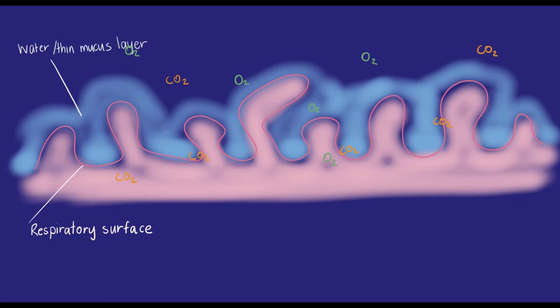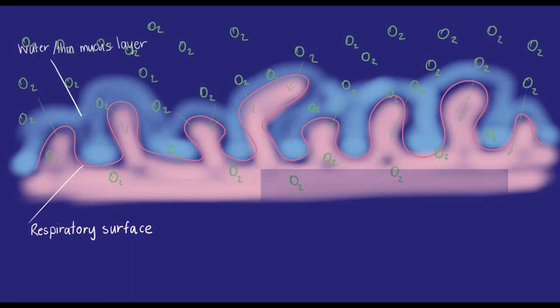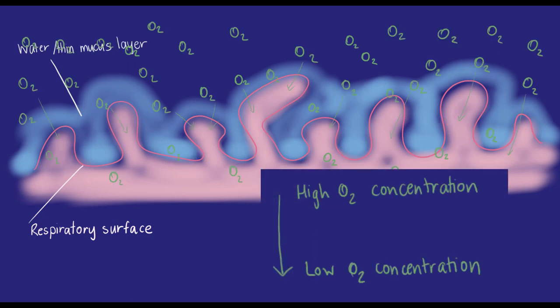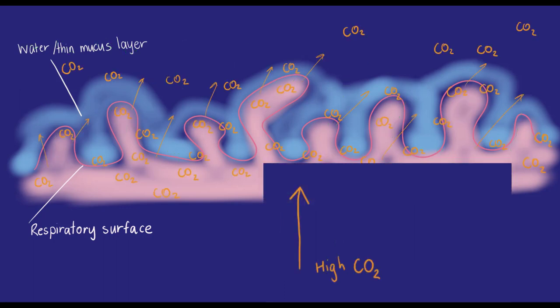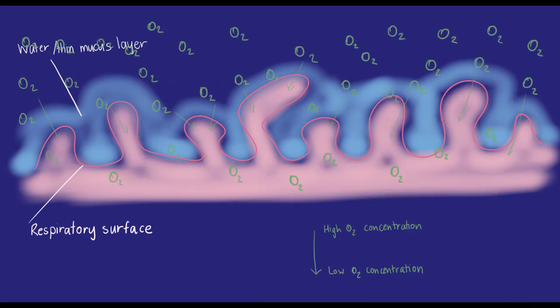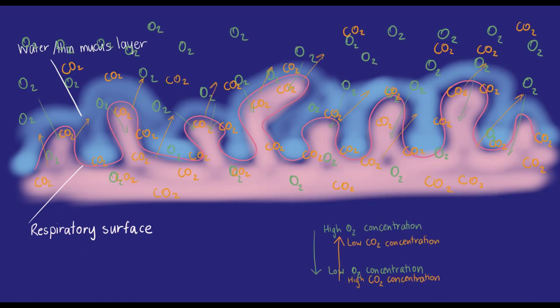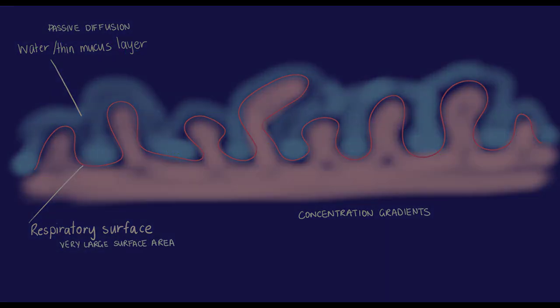First, the gases are dissolved in water before they can diffuse across cell membranes. Both oxygen and carbon dioxide are only ever passively transported by diffusion, and so the system relies on concentration gradients, respiratory surfaces with very large surface areas, and the presence of water.